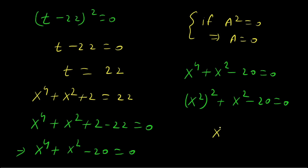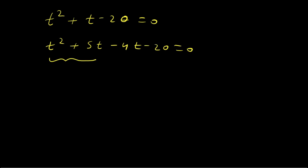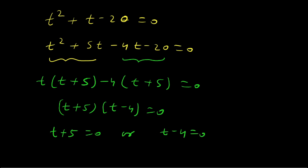We apply substitution again: let x² = t, giving t² + t − 20 = 0. Applying middle term splitting: t² + 5t − 4t − 20 = 0. Taking common factor t from the first two terms gives t(t + 5), and −4 from the last two terms gives −4(t + 5). So (t + 5)(t − 4) = 0.